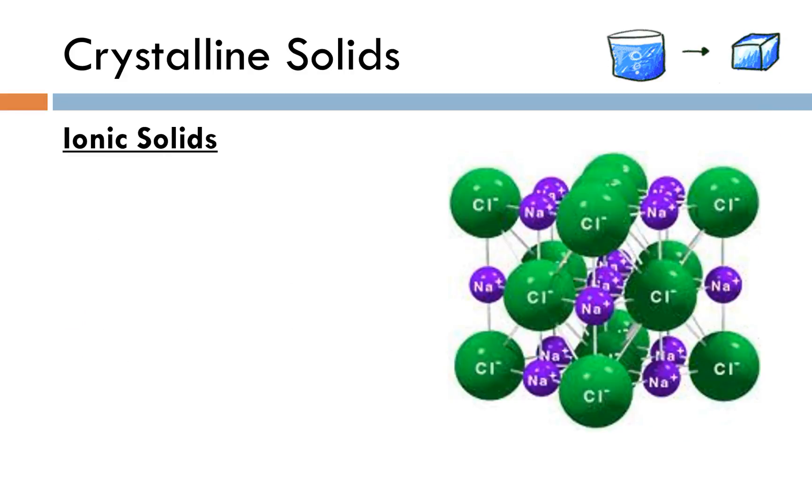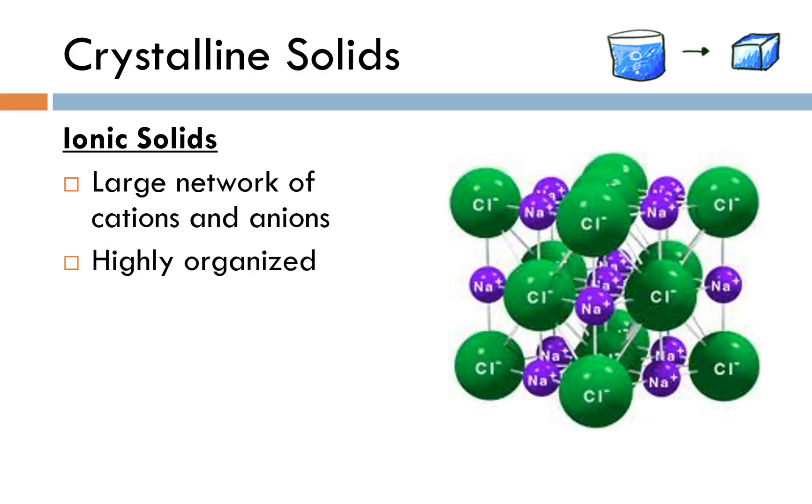Last but not least we have ionic solids. I know we've seen this picture a bunch of times before. We have this large repeating network of cations and anions. We call this a crystal lattice. Ionic compounds are extremely well organized and we have in this case with sodium chloride alternating chloride and sodium ions. This is really just the most stable way to arrange these ions to minimize the repulsive forces between like charges. Ionic solids have really high melting points. Again this is one that you're not going to be able to melt at home.